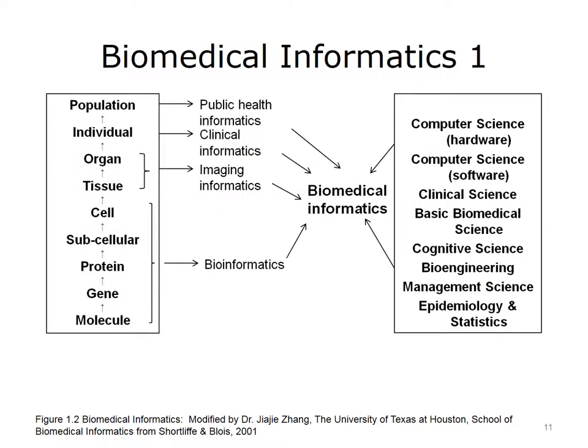Shortliff and Blois (2001) view biomedical informatics as four subfields, represented by Figure 1.2: public health informatics, clinical informatics, imaging informatics, and bioinformatics, each with a specific focus. The right-hand side of the figure lists the component sciences in biomedical informatics, which includes computer science, clinical science, basic biomedical science, cognitive science, bioengineering, management science, and epidemiology and statistics.